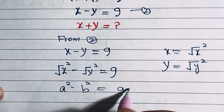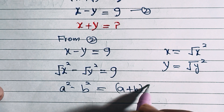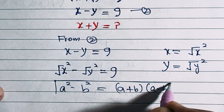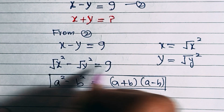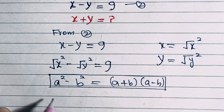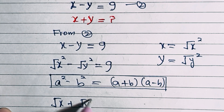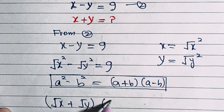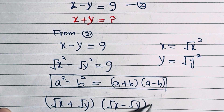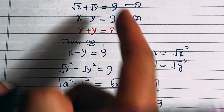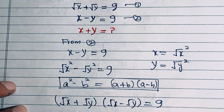So this equation becomes (√x + √y)(√x - √y) = 9. Now from equation one we have √x + √y = 9, so we substitute that in.